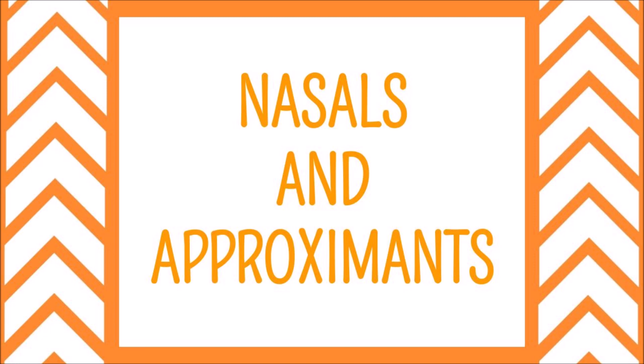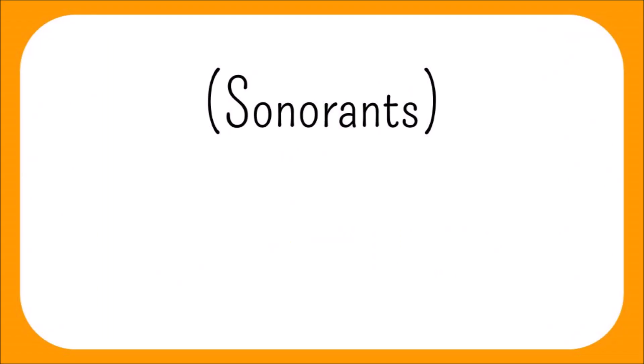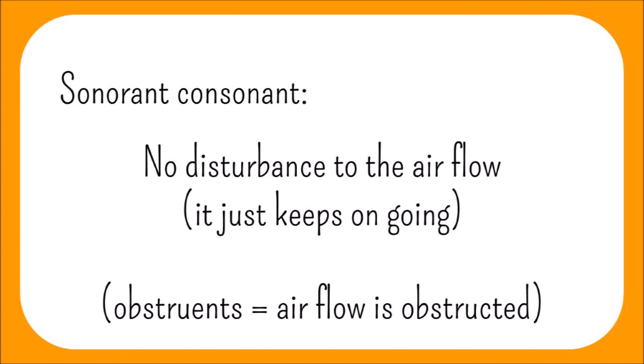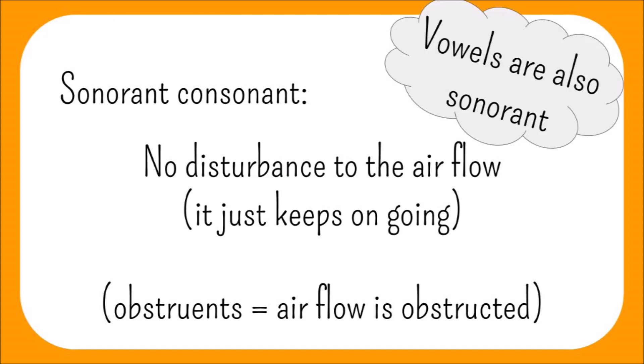Welcome to a series all about the sounds of English. In this series, we're going to learn all about the physical sounds that we have in English. Today, we're going to learn about the sonorants, that is, the nasals and the approximants. A sonorant consonant is a sound that is produced without any disturbance to the airflow, as opposed to obstruents, where the airflow is obstructed. Vowel sounds are also sonorant. Sonorant consonants in English can be split into nasals and approximants.